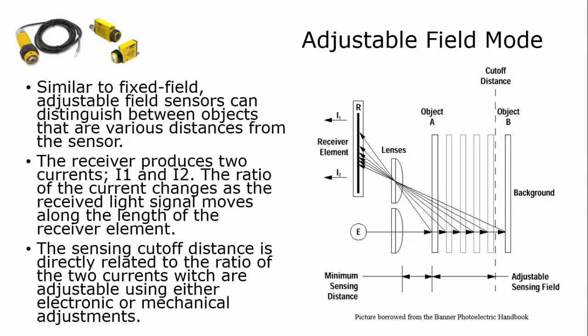The adjustable field sensor is very similar to the fixed field sensor except that this has a variable receiver. In other words, it has one long receiver and it generates a current output.